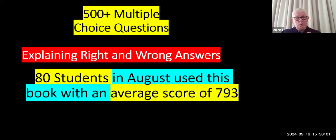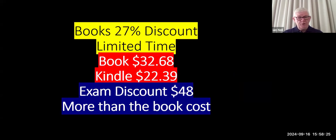We've got 500 multiple choice exam questions and they explain the right and wrong answers. 80 students in August used this book with an average score of 793. So this book, because it's written in the same format as the exam objectives, prepares you very well for the exam. The book is currently available on Amazon at a 27% discount — the book is $32 and the Kindle is $22.39. Coming with the book, you get an exam discount of $48. That is a bigger discount than the cost of the book, so once you buy the book, you effectively make a profit.